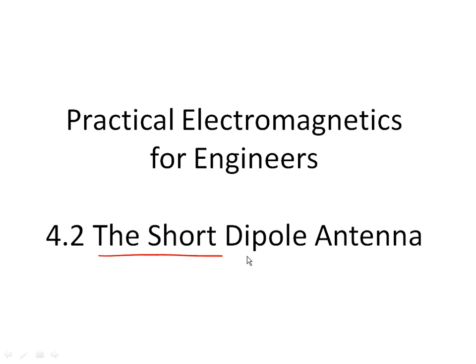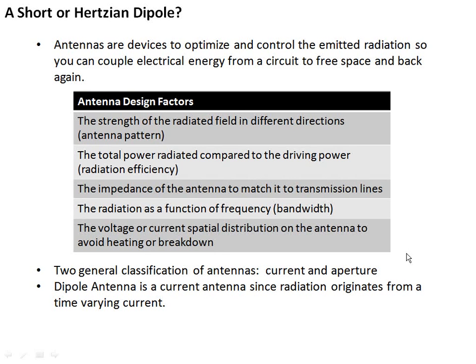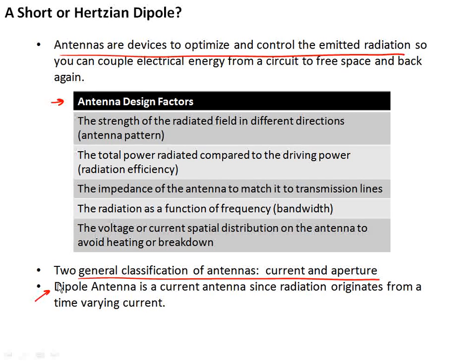The antenna type we're going to be talking about is a short dipole antenna, also called a Hertzian dipole. If you're following along in my class, all of this is in Chapter 9.1 of your textbook. As we talked about last time, antennas are devices that optimize to control emitted radiation from a circuit. The Hertzian dipole antenna is a current antenna, because the radiation originates from a time-varying current.